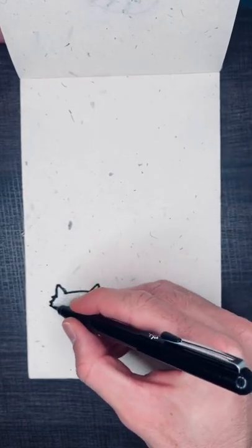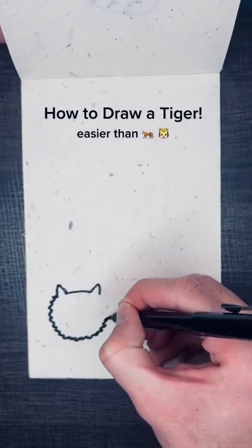A drawing you didn't know you needed in your life. How to draw a tiger. Start with some cat ears and a scribbly circle.